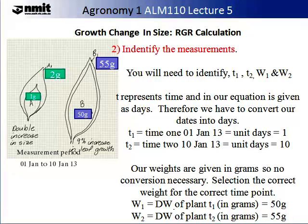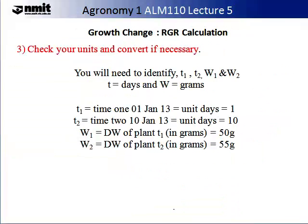Time 1 is the 1st of January 2013. Time 2 is the 10th of January 2013. Our weights are given in grams, so no conversion is necessary. Select the correct weight for the correct time point: W1 is 50 grams, while W2 is 55 grams. Check your units and convert if necessary — this is stage 3. In our example this is not necessary, but there are some situations where you would have to be mindful of this. Once you have checked your units and they are consistent, you can then move on to the next stage.